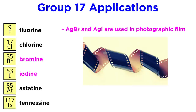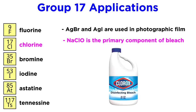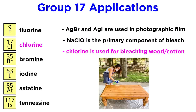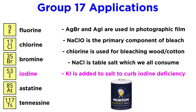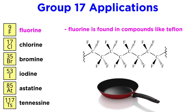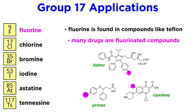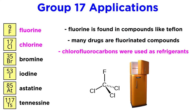Moving on to applications, silver bromide and silver iodide are used in photographic film. Sodium hypochlorite is the primary component of bleach. Chlorine is also important for bleaching wood pulp and cotton cloth. Sodium chloride is table salt, ubiquitous in cooking. Potassium iodide is added to table salt in trace amounts to counter iodine deficiency, which impacts thyroid function. Fluorine is found in interesting compounds like Teflon, which is useful in creating nonstick surfaces for a variety of products, and there are also many important fluorinated pharmaceuticals. Chlorofluorocarbons, such as Freon, were used as non-toxic refrigerants, though this was eventually discontinued as it was discovered that these compounds were damaging the ozone layer.